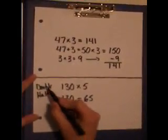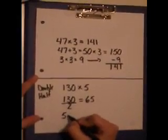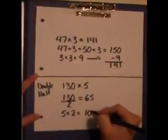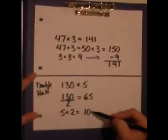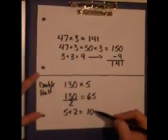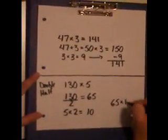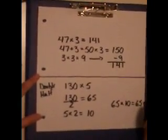I can now double the second factor, 5. This gives me an answer of 10. I can now use these two easier numbers to find the answer to the original equation. So 65 multiplied by 10 is equal to 650.